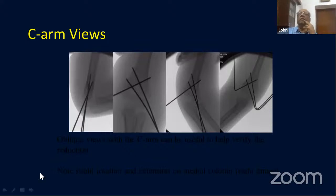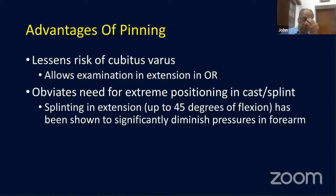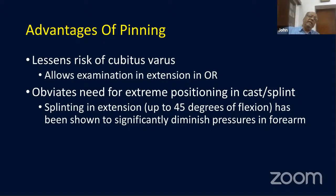Make sure you get AP, lateral, and oblique C-arm views to check for rotation of the fragments. The advantage of pinning is that it allows you to extend the elbow to check position and obviates the need for extreme positioning in the cast — you can splint it at 45 to 50 degrees of flexion, reducing the risk of swelling and compartment syndrome.